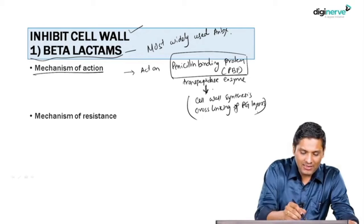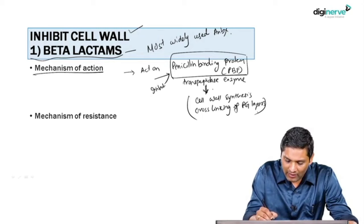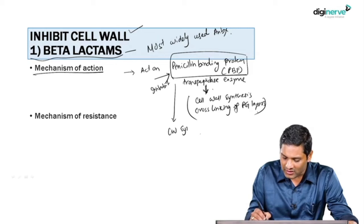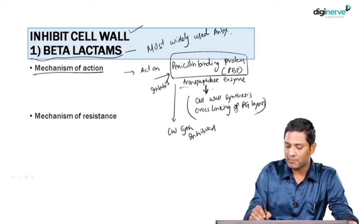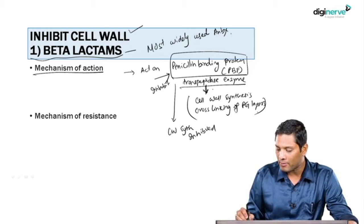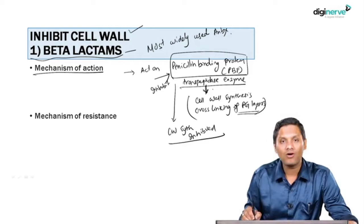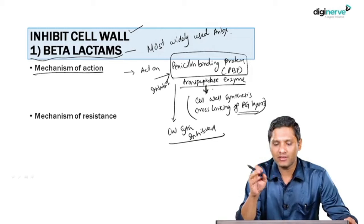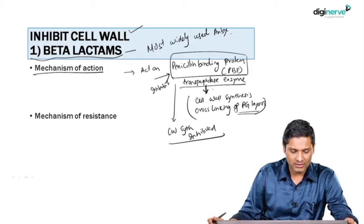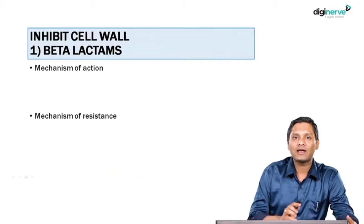The penicillin-binding protein is an essential protein for cell wall synthesis. Beta-lactam antibiotics bind to this protein and inhibit it. As a result, cell wall synthesis is inhibited — the transpeptidase is inhibited, peptidoglycan layer synthesis is inhibited, and ultimately cell wall synthesis is inhibited. This is the common principle by which all types of beta-lactam drugs work.